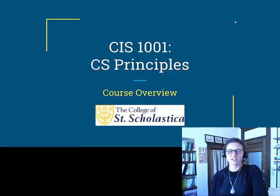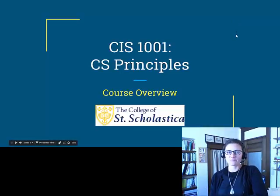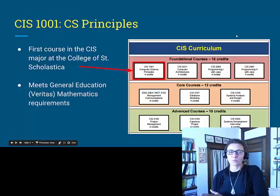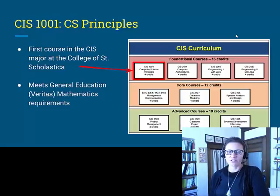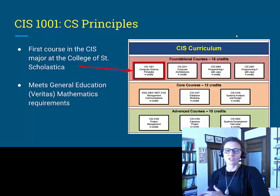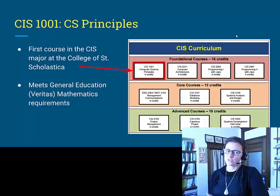Welcome to the Computer Science Principles course here at the College of St. Scholastica. In this video I'm just going to give you an overview of the course and what's involved. You may be taking this course for one of two reasons: primarily it is the first course in the CIS — Computer Information Systems — major here at St. Scholastica. You would usually take this course fall of your first year in the major, and then in the spring you'll take the Computer Architectures course. It also meets general education or VERITAS requirements for the mathematics area, so some of you may be taking it to fulfill your math requirement.